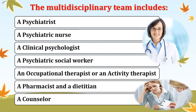The multidisciplinary team includes a psychiatrist — a doctor specializing in psychiatry — a psychiatric nurse who has specialization in psychiatry, a clinical psychologist, a psychiatric social worker, an occupational therapist or activity therapist who provides therapy to patients, then a pharmacist, dieticians, and a counsellor. These are the multidisciplinary personnel.